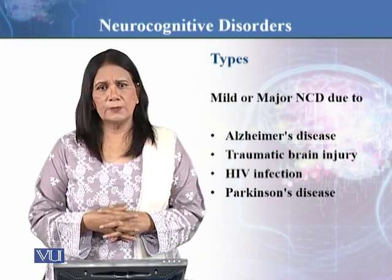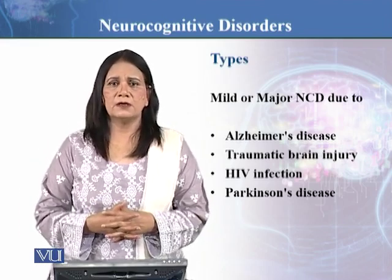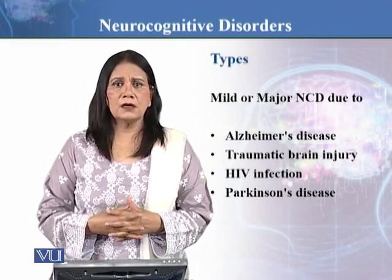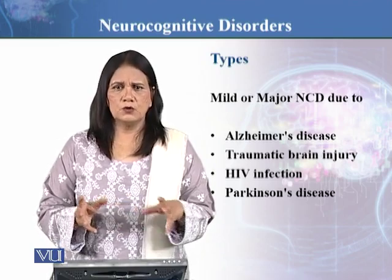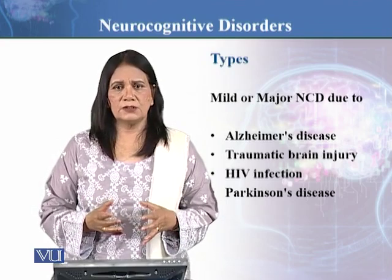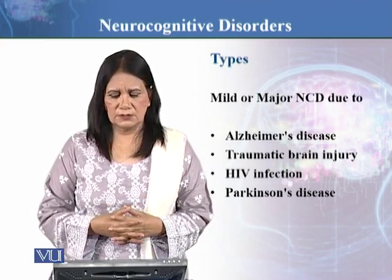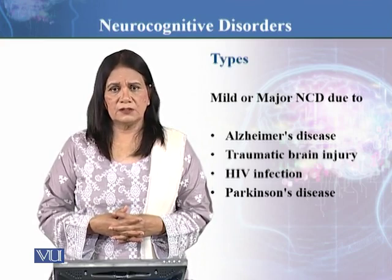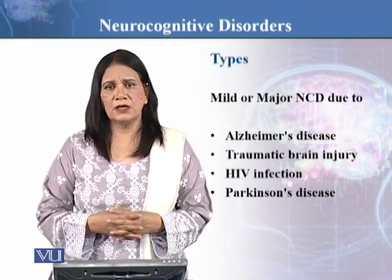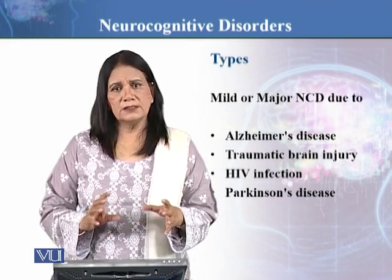Then there is traumatic brain injury. For instance, somebody had a road accident, a fall, or an industrial accident. It can be a closed head injury or an open head injury. Depending on the localization of the injury — which particular area of the brain it has affected — it may result in neurocognitive disorders. Then there is HIV infection, which actually results in AIDS. It has also been found that HIV infection can result in neurocognitive disorder.